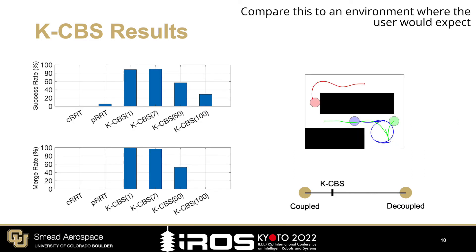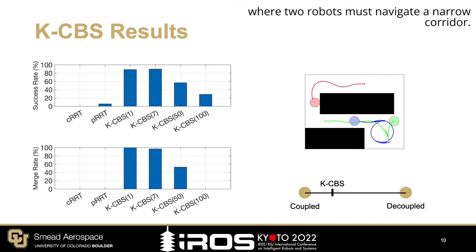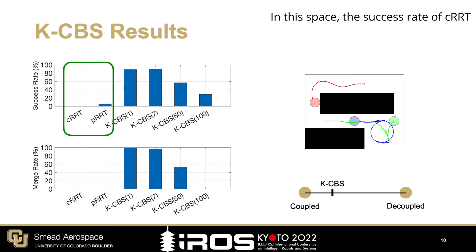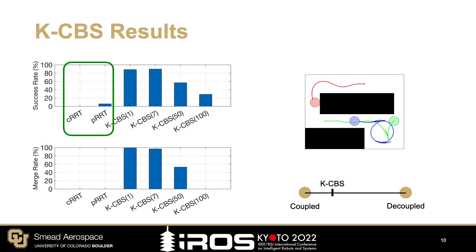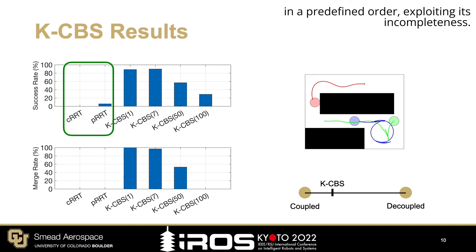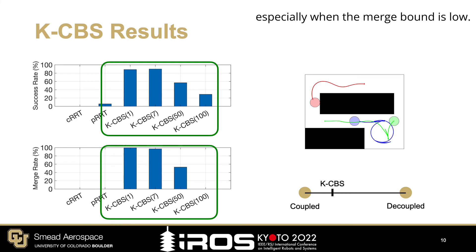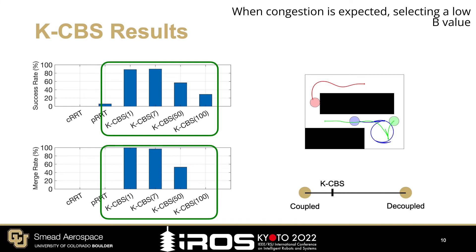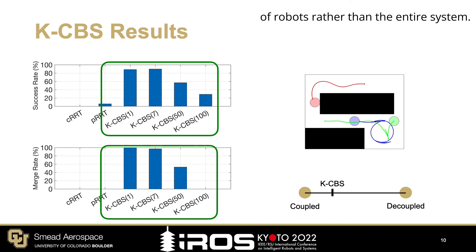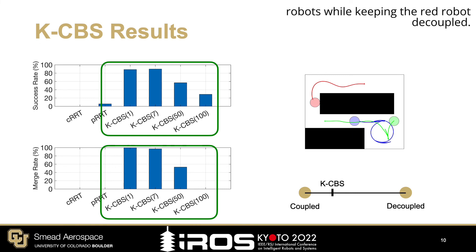Compare this to an environment where the user would expect a lot of congestion, such as one where two robots must navigate a narrow corridor. In this space, the success rate of CRRT is very low because the algorithm couples all three robots together, blowing up the state space. PRRT also has minimal success because it plans in a predefined order, exploiting its incompleteness. KCBS, on the other hand, offers improved performance, especially when the merge bound is low. When congestion is expected, selecting a low B value allows for better performance by coupling only a subset of robots rather than the entire system.